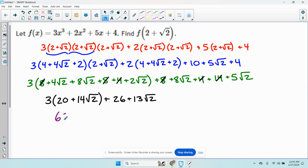Distribute the 3. I have 60 plus 3 times 14. That's 30. That's 42. 22 root 2 plus 26 plus 13 root 2, which finally gives us 60 plus 26 is 86 plus, this is going to be 55 root 2. So if you wanted to enter that, that should be the answer.